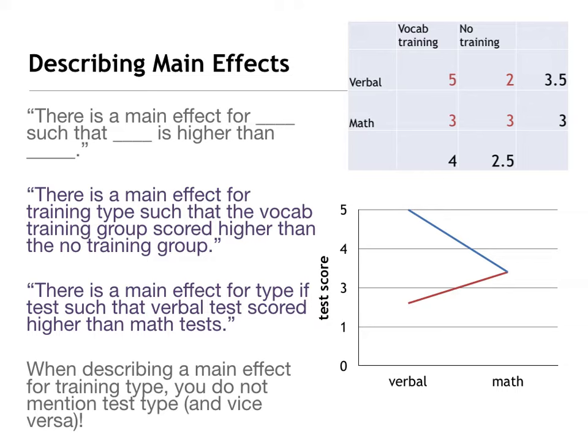You need to have a checklist for each description of a main effect. The same thing for the second one — there's a main effect for the type of test, with no mention about training. The checklist: name the type of test, mention both levels — both math and verbal test scores — and talk about that difference, that verbal scored higher than math scores. When describing these things, only talk about each level of that one main effect.